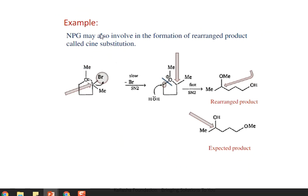Neighboring group participation may also involve the formation of a rearranged product called syn substitution. In this example, the neighboring group participates, pushes out the bromine, and after hydrolysis with water, the oxygen-carbon bond breaks and a rearranged product is formed. The expected product was different, but due to NGP the attack is favored on the more accessible side, and the hydroxyl group attaches to the adjacent carbon.